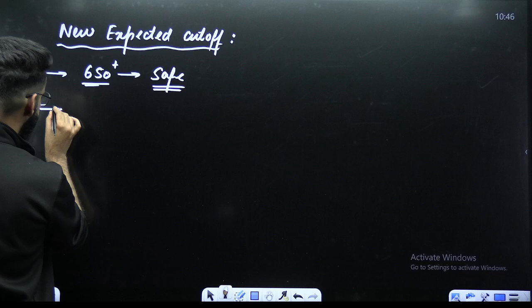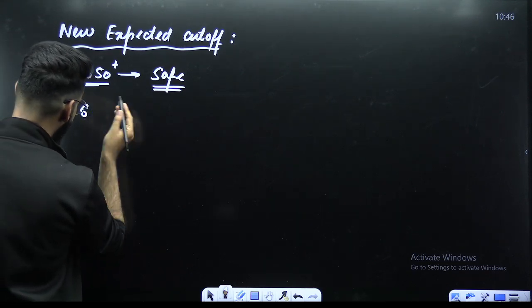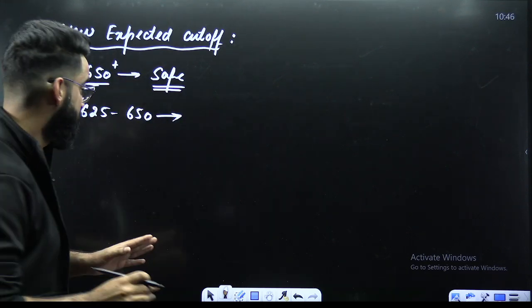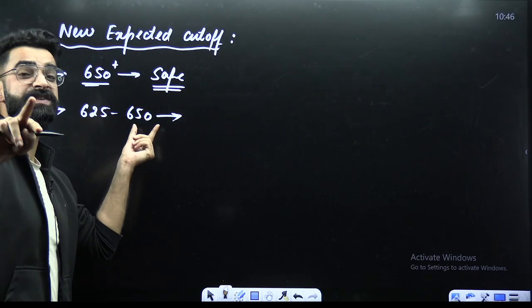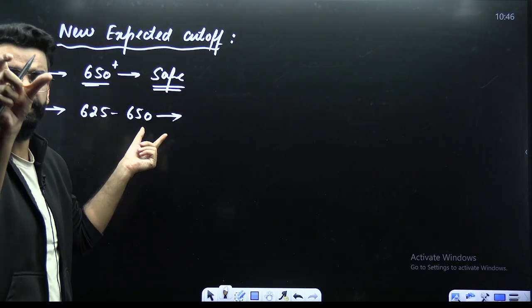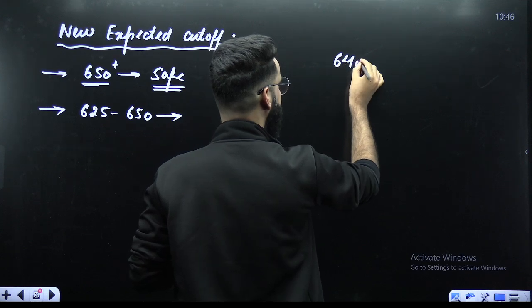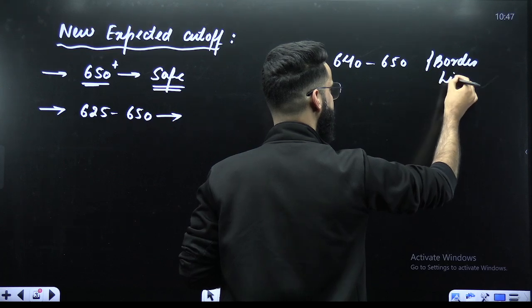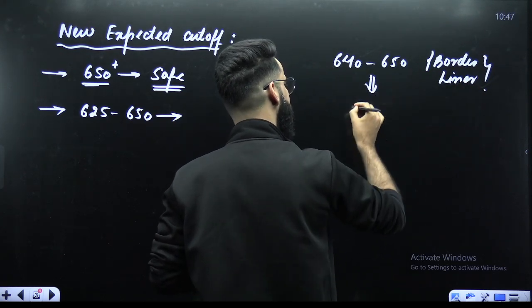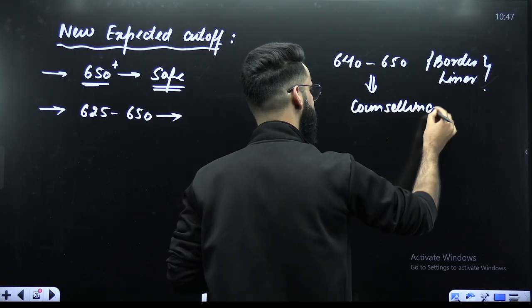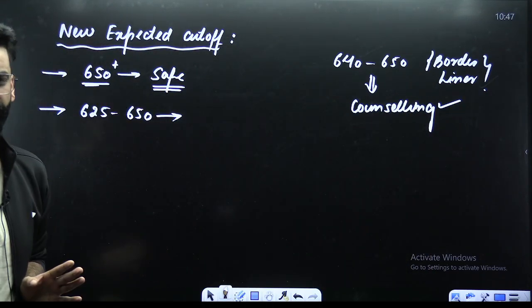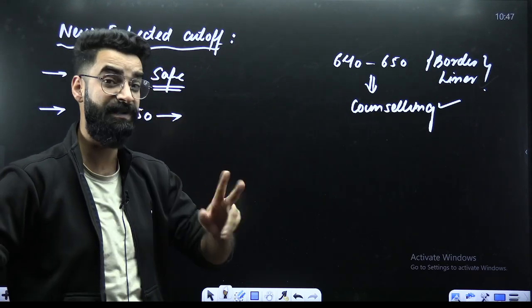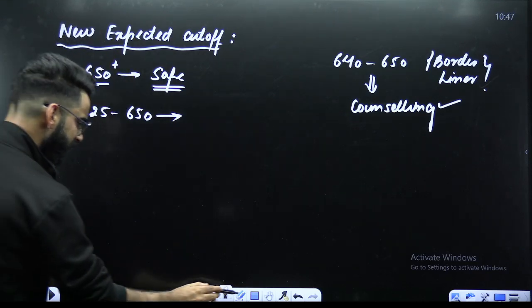Now all those students who are scoring between 625 to 650, if I particularly talk about the category of 640 to 650. Let me write it over here, 640 to 650. This will be the borderline. You should definitely wait for the counseling. Maybe through state quota, something you might get a college for the MBBS. There are chances. Chances are rare, but chances are there for those students who are scoring between 640 to 650.